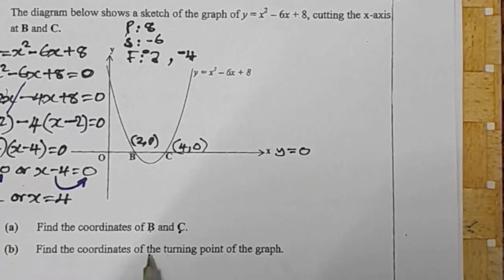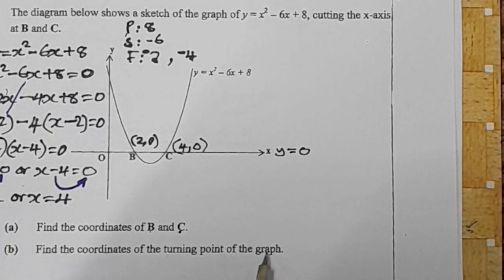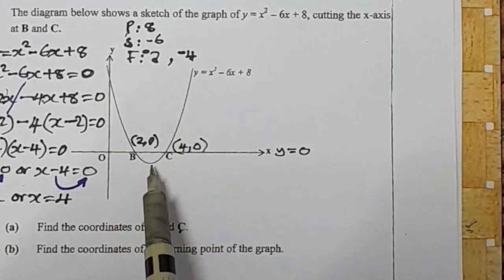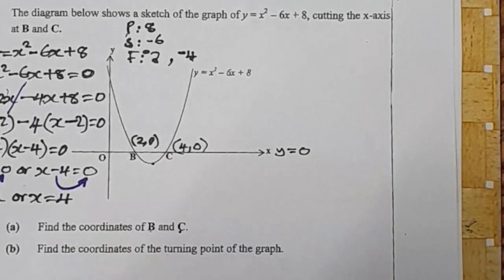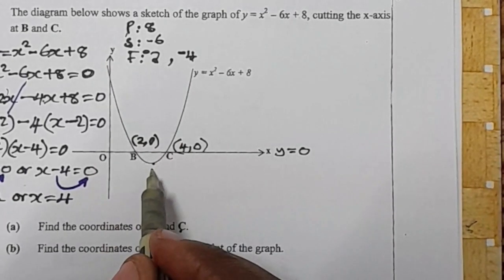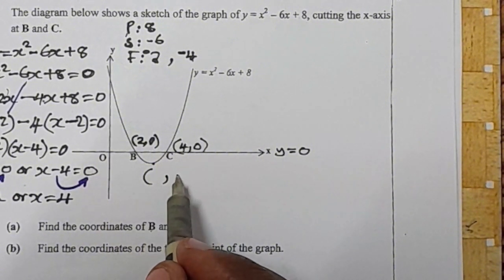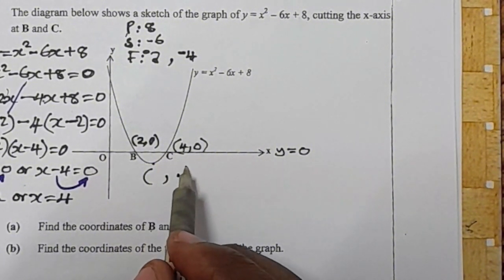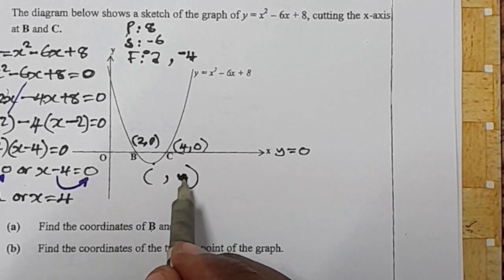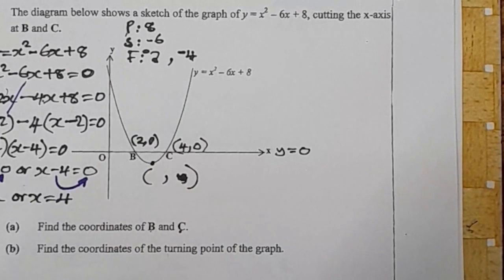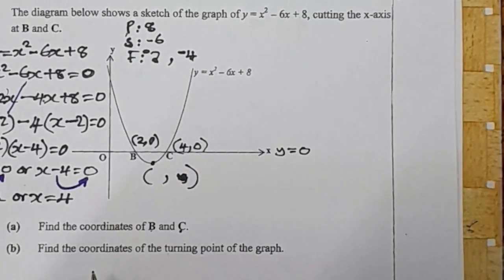The second question says: find the coordinates of the turning point of the graph. You can see that the graph is coming like this, and the turning point is here — the point at which the graph is turning. So we are looking for the x and y coordinates at this point where the graph is turning.